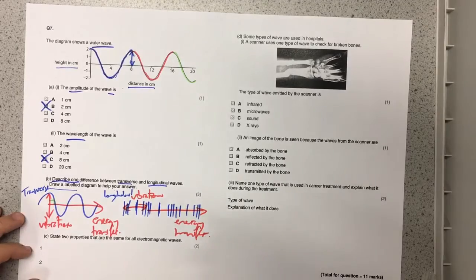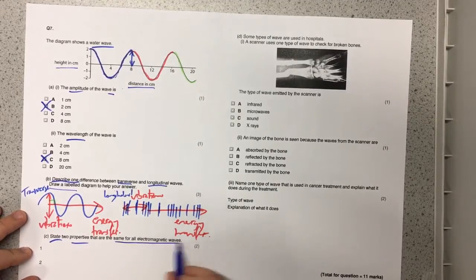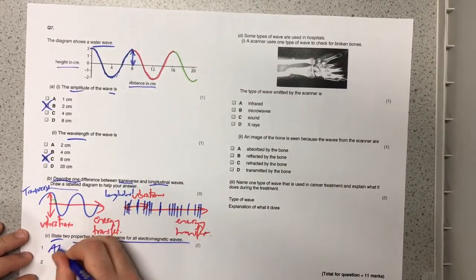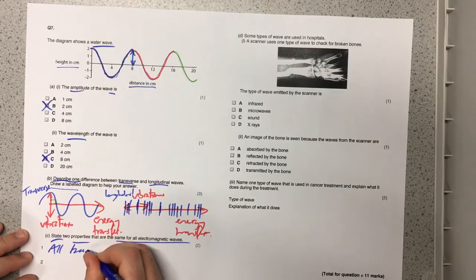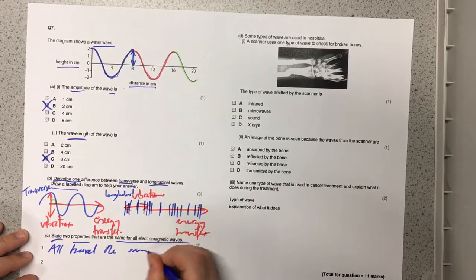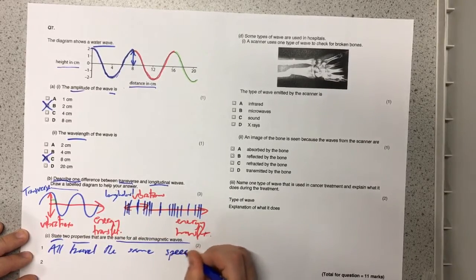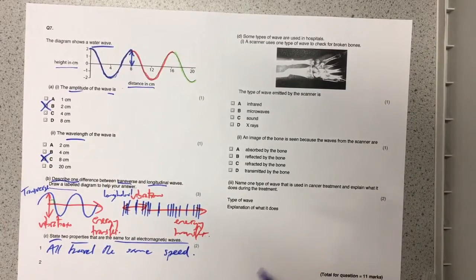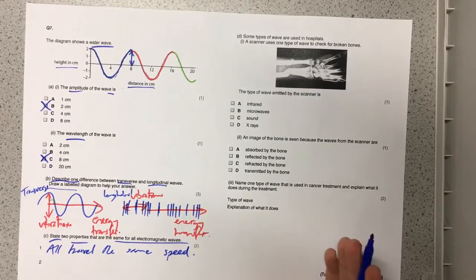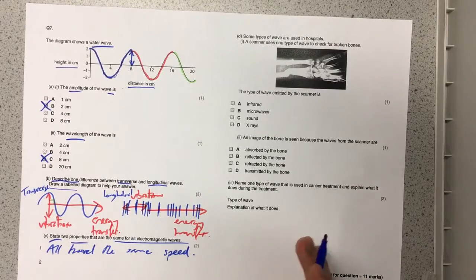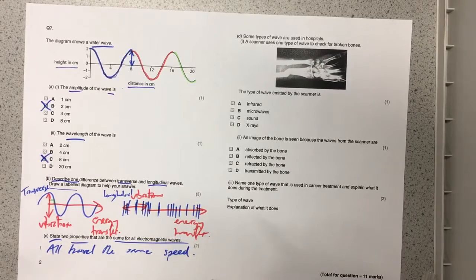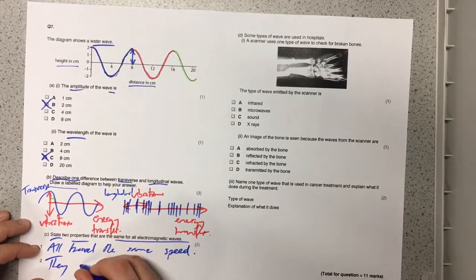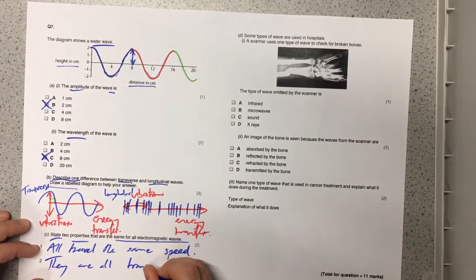The next question says state two properties that are the same for all electromagnetic waves. The first one that springs to mind is that they all travel the same speed. And that is the speed of light, 300 million meters per second. And then you've got to think well what else could it be? Well electromagnetic waves they're all light and so you can just simply state that they are all transverse waves.